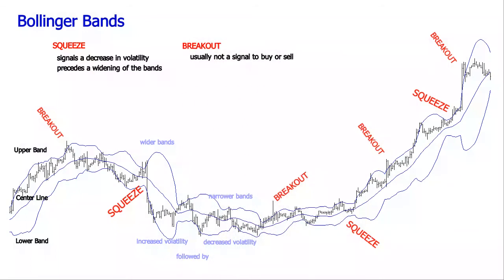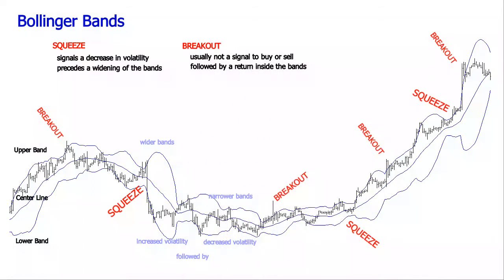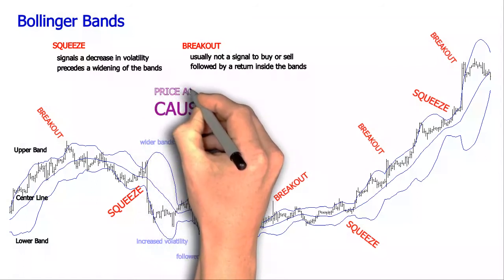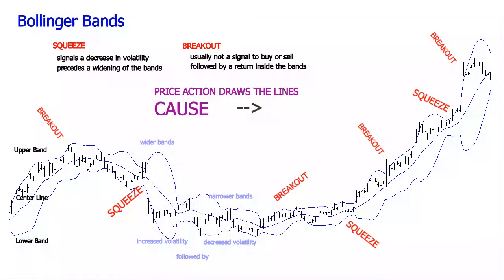Because Bollinger Bands technical indicator is based on a simple moving average, it is also a lagging indicator. By the time a squeeze or a breakout is observed on a chart, the price evolution that determined the plotting has already produced the effect which we observe.